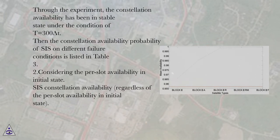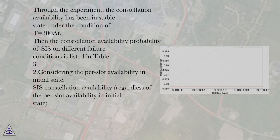The constellation availability probability of CIS on different failure conditions is listed in Table 3. Case 2: considering the per-slot availability in initial state — CIS constellation availability, regardless of the per-slot availability in initial state.